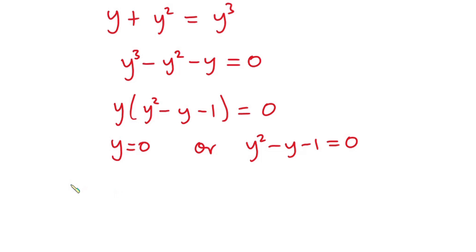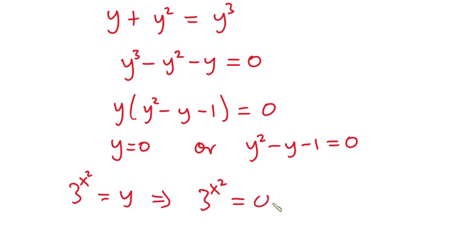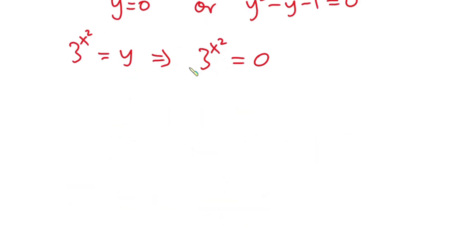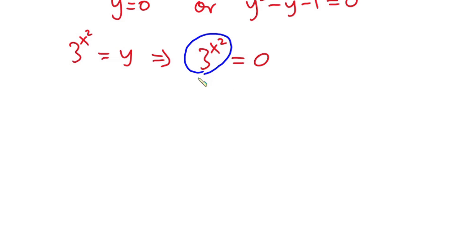This implies y equals zero, or y squared minus y minus one equals zero. For the case y equals zero, we initially said 3 to the power x squared equals zero. Looking at this critically, there is no way the left-hand side equals zero. If x equals zero, this side is one; if x equals two, this side is 81. As x decreases, the value decreases but will never reach zero. So this equation cannot be solved.